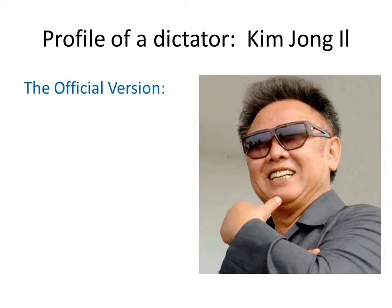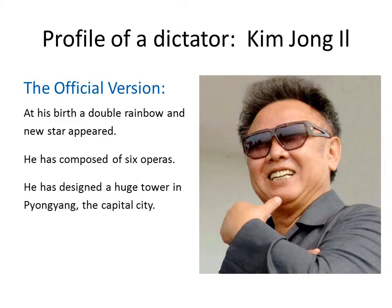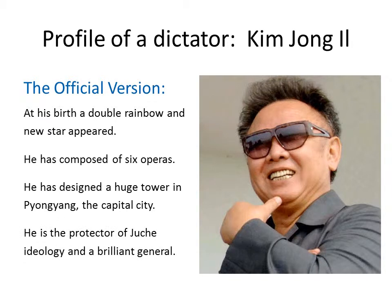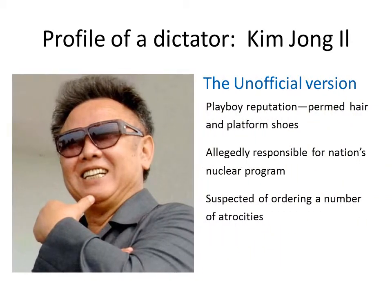The official version of the story is that a double rainbow appeared at his birth and a new star, that he's composed six operas and designed a huge tower in Pyongyang, the capital city. He's the protector of Juche ideology and a brilliant general. The unofficial version is that he has a playboy reputation, has his hair permed, and wears platform shoes. He's allegedly responsible for the nation's nuclear program and suspected of ordering a number of atrocities.